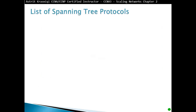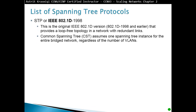In this section we have a list of Spanning Tree Protocols. First is Spanning Tree Protocol IEEE 802.1D, which was made in 1998. This is the original IEEE 802.1D version that provides a loop-free topology in a network with redundant links. This is known as Common Spanning Tree, which assumes one Spanning Tree instance for the entire bridge network regardless of the number of VLANs.